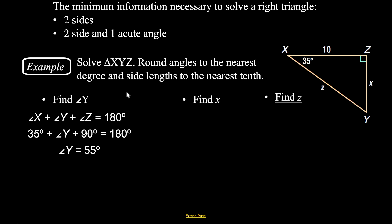Now we need to find the lengths of the sides. To find side x, I relate it to the 35-degree angle — x is opposite that angle and the given side length of 10 is the adjacent side. What trig function uses opposite and adjacent? I have two choices: tangent or cotangent. It's best to keep your variable in the numerator, so I'm going to choose the tangent function. The tangent of 35 equals opposite over adjacent, which is x over 10.